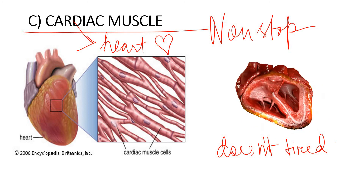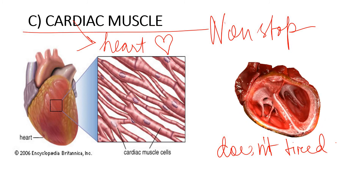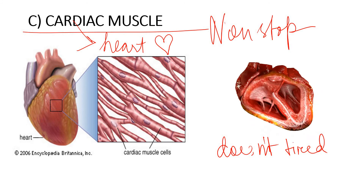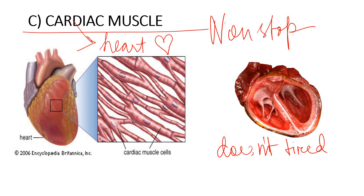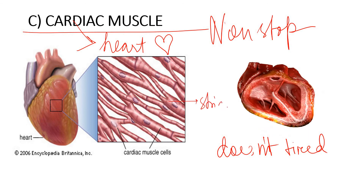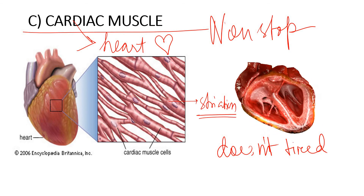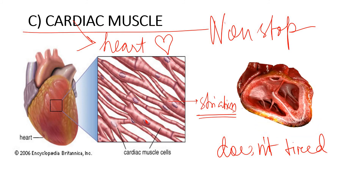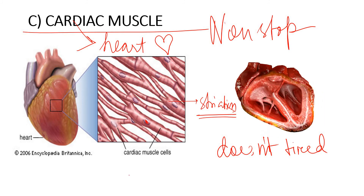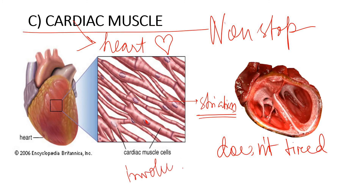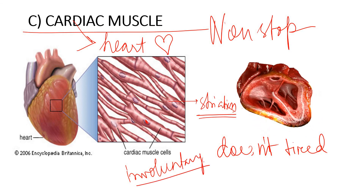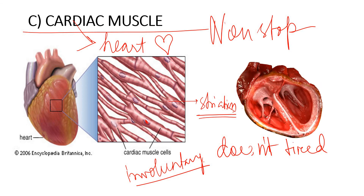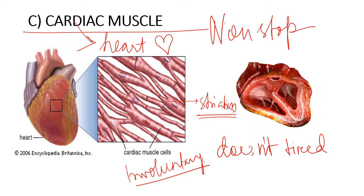Cardiac muscles also have dark and light bands, meaning they also show striations, with nucleus present. However, they are also involuntary — we have no control over the functioning of the heart. It keeps beating on its own and we cannot stop it.